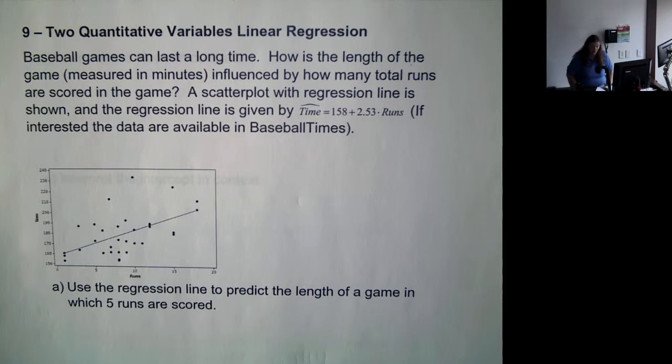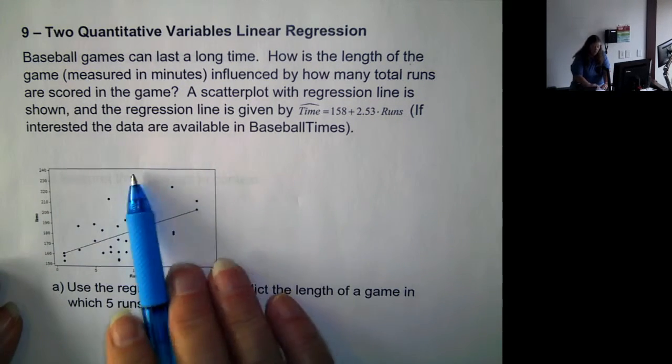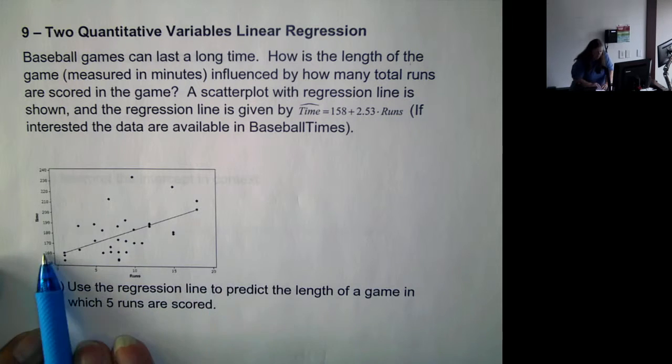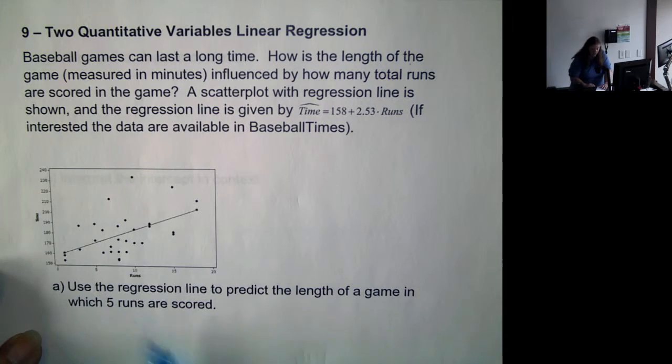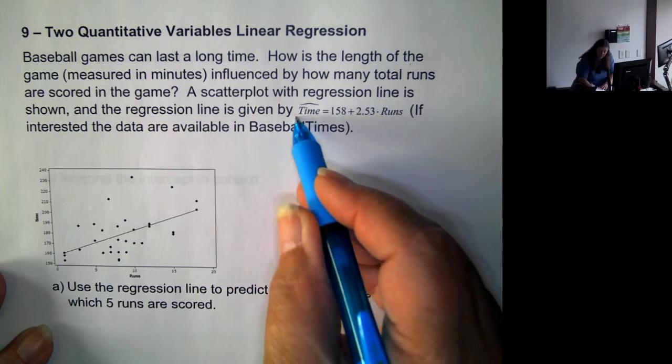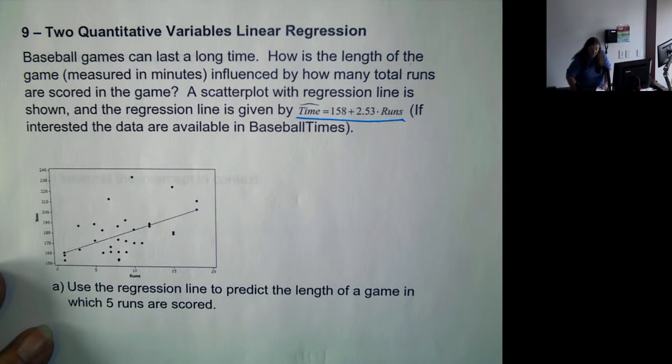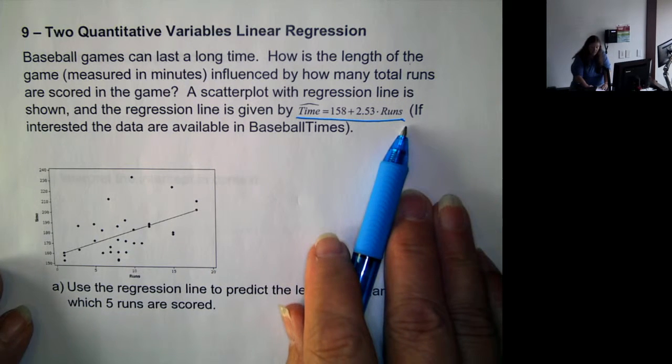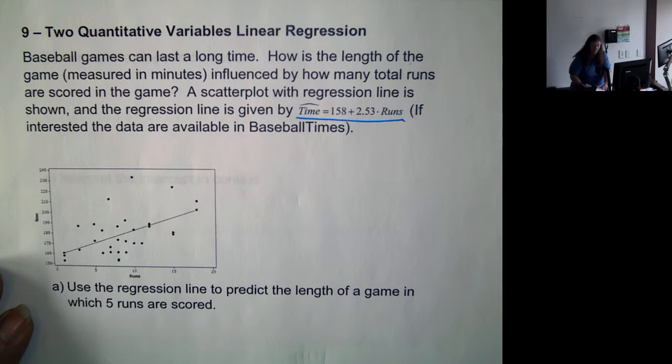Baseball games can last a long time. How is the length of the game measured in minutes influenced by how many total runs are scored in a game? So we have a scatterplot with the regression line as shown. So the dots represent the number of runs scored and the length of time in the game. The regression line is given by the predicted time equals 158 plus 2.53 times the runs, and the data are available in baseball times.